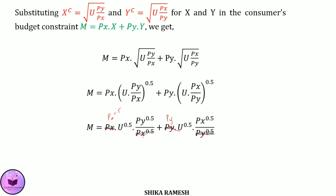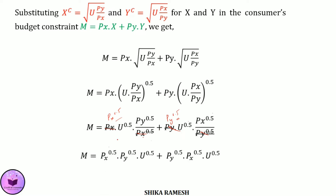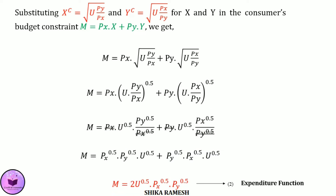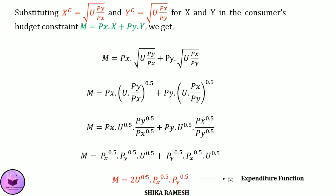After cancellation, the remaining terms are Px raised to 0.5 and Py raised to 0.5. So the equation is rewritten as: M equals Px raised to 0.5 multiplied by Py raised to 0.5 multiplied by U raised to 0.5, plus Py raised to 0.5 multiplied by Px raised to 0.5 multiplied by U raised to 0.5. This gives us the expenditure function.